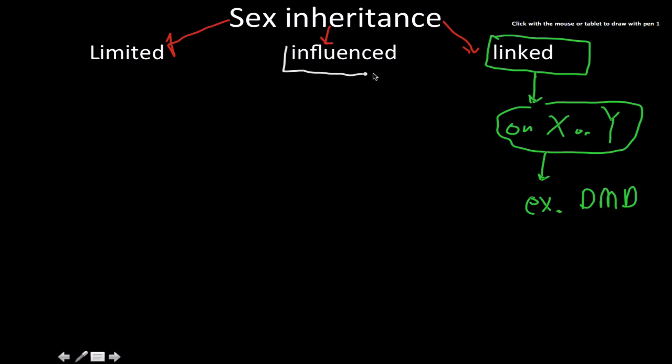Next on the list would be sex-influenced inheritance. In both sex-limited and sex-influenced inheritance, they do share one thing in common. These are both traits that are located on autosomes. What is an autosome? Well, it's any type of chromosome that is not a sex chromosome.